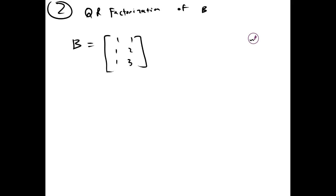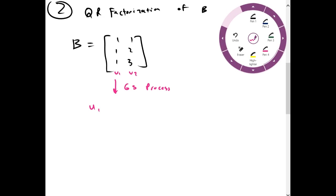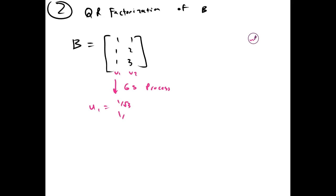We actually did this in the Gram-Schmidt process video. And once we did that, we got, if this is V1 and V2, we got U1 and U2, where U1 equals 1 over root 3, 1 over root 3, and 1 over root 3, and U2 equals negative 1 over root 2, 0, and 1 over root 2.